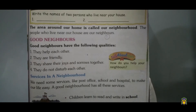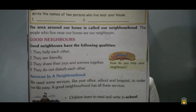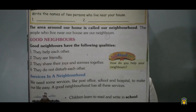The people who live near our house are our neighbors. Please underline that sentence. Next heading: Good Neighbors. Good neighbors have the following qualities. First point, they help each other. Second point, they are friendly. Third, they share their joys and sorrows together. Fourth point, they do not disturb each other.